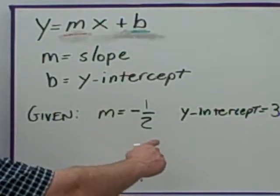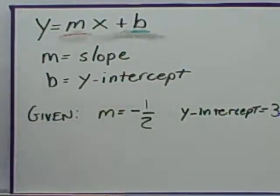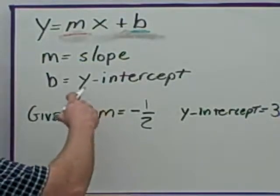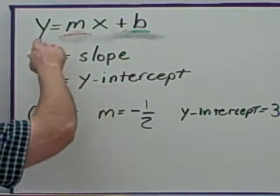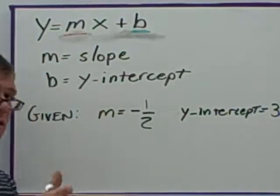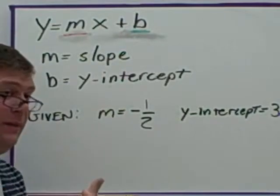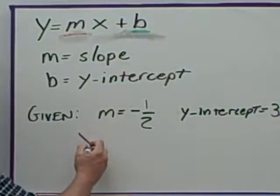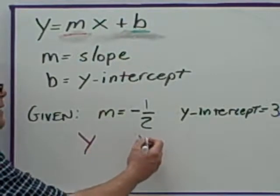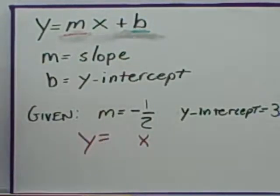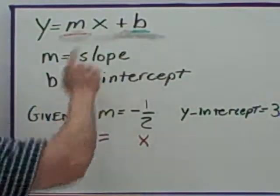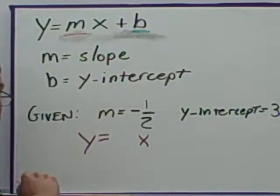So if we are given m equals one-half and the y-intercept equals three, and we are asked to write an equation, we can do that using this form. We keep the y and the x — remember our equations need to have two variables. We keep the equal sign because it is an equation. What we are replacing is the slope and the y-intercept.